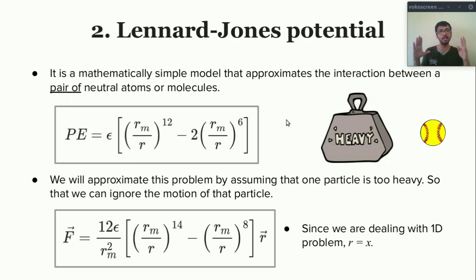Now we will approximate our problem to make things easy. Focus on this word: pair of atoms and molecules. Pair means at least two atoms or molecules. But at this stage it is very difficult to code multi-particle system, so what we will do is use a smart trick. We will consider one of the particles very heavy so we can neglect its motion and can focus on this light particle.